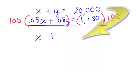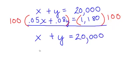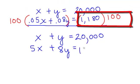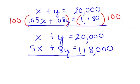I will rewrite the first equation. I want to keep my system together. The second equation, I'm multiplying everything times 100. 100 times .05 is just 5X plus 100 times .08 is 8Y and 100 times 1,180. I will just add two zeros onto that. So that would be 118,000.